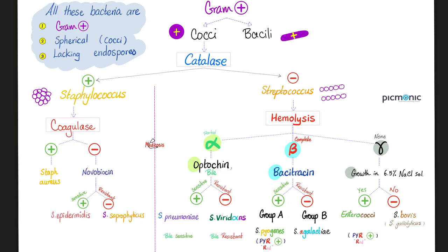Are you bacteria, virus, fungus, parasite or prion? I am a bacteria. Are you gram-positive or gram-negative? I am gram-positive. Are you a coccus or a rod? I am a coccus — I am a sphere. Are you catalase-positive or catalase-negative? Since I am a streptococcus, I am catalase-negative. Do you cause complete hemolysis, partial hemolysis or no hemolysis? No hemolysis. Can you grow in a salt solution? Yes, I can. Congratulations, you are the Enterococcus.